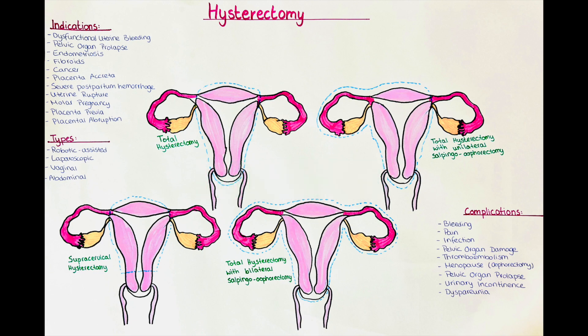A hysterectomy is a surgical procedure to remove the uterus and in most cases the cervix. Depending on the indication for the surgery, a hysterectomy may involve removing surrounding organs and tissues called the adnexa of the uterus, which are the fallopian tubes and the ovaries.